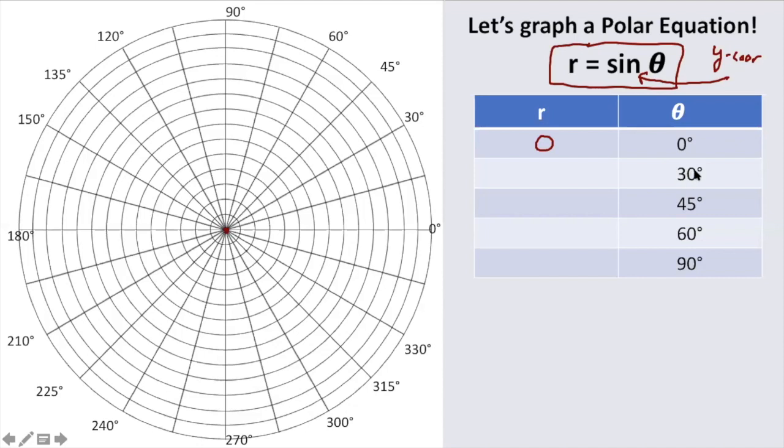Next, where are we? 30 degrees on the unit circle. 30 degrees is root 3 over 2 comma 1 half. So 1 half or 0.5 is the y value. So I am going to go 0.5.